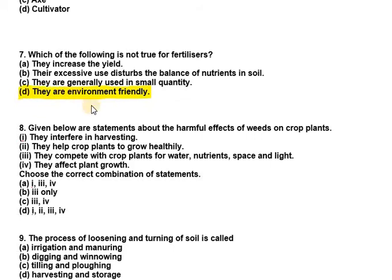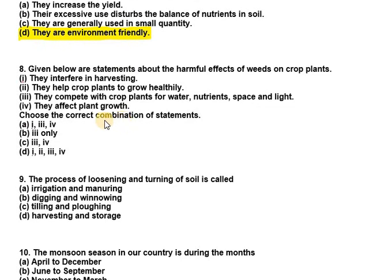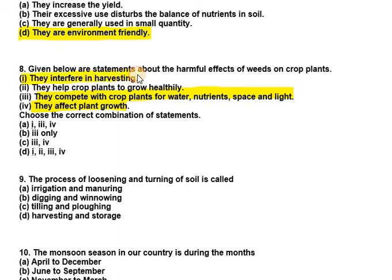Question eight: given below are statements about the harmful effects of weeds on crop plants — (1) they interfere in harvesting; (2) they help crop plants to grow healthy; (3) they compete with crop plants for water, nutrients, space, and light; (4) they affect plant growth. Statement two is wrong — weeds do not help crop plants grow healthy. So the correct combination is statements one, three, and four, which corresponds to option A.